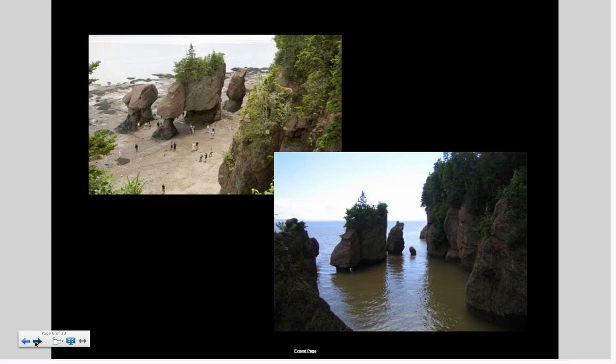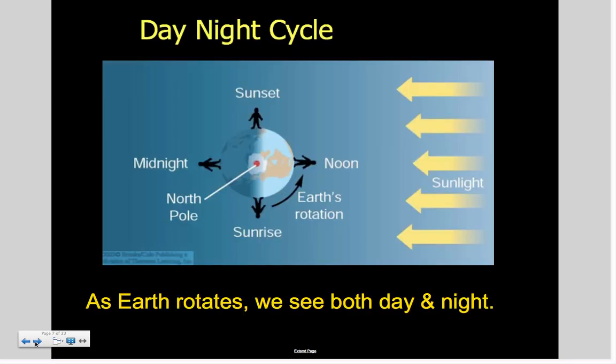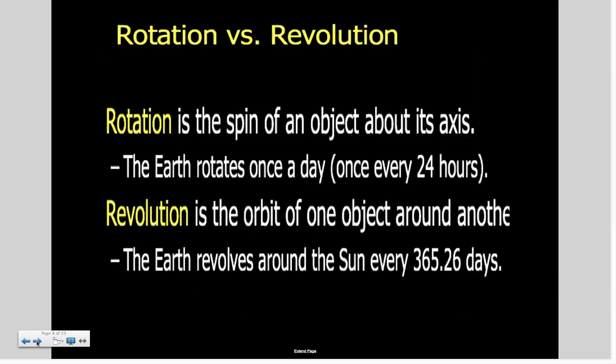Day and night cycle—this is going to go pretty quick because hopefully you understand how day and night works. The Earth rotates and that's how we get our day and night cycles. Rotation versus revolution is important. Rotation is the spin on an axis. If you were seated in your chair and I said rotate and face forward, you're not moving from your chair, you're rotating in one spot.